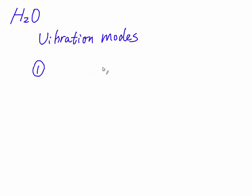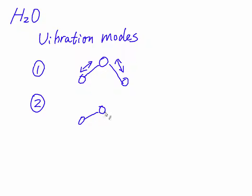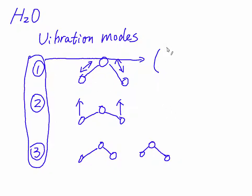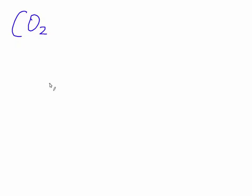Let's take two examples. First, we talk about water molecules. Water molecules have three kinds of vibrational modes. These three vibrational modes can generate Raman signals, because the polarizability is not zero at any exciting displacement.